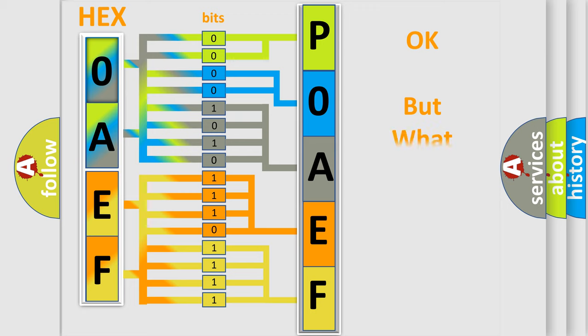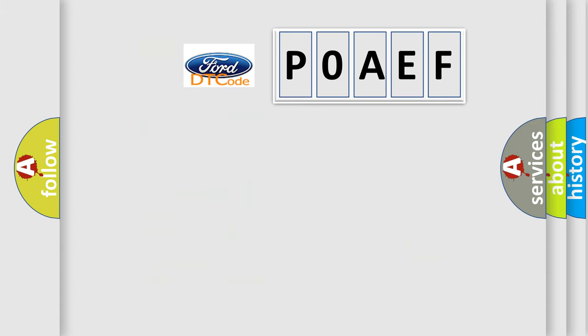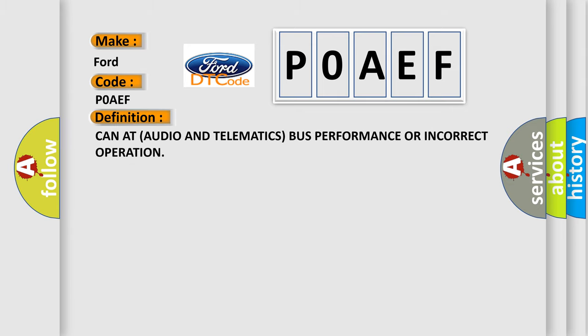The number itself does not make sense to us if we cannot assign information about what it actually expresses. So, what does the diagnostic trouble code P0AEF interpret specifically for car manufacturers? The basic definition is: CAN audio and telematics bus performance or incorrect operation.